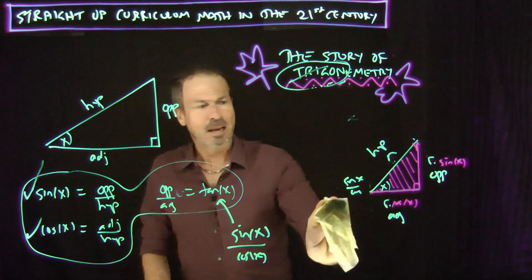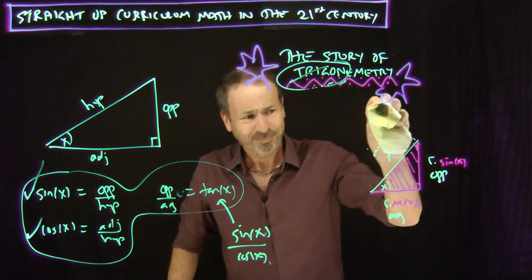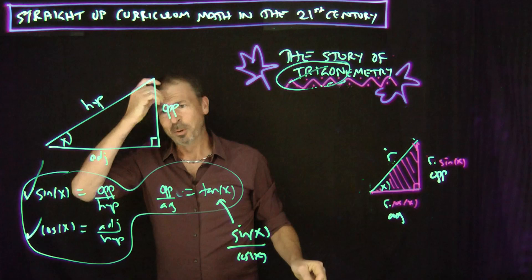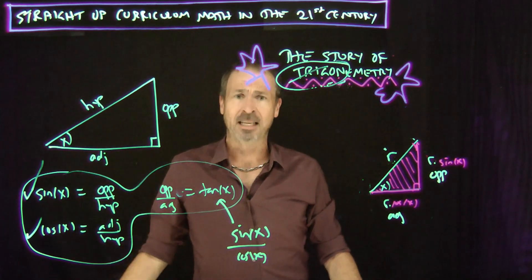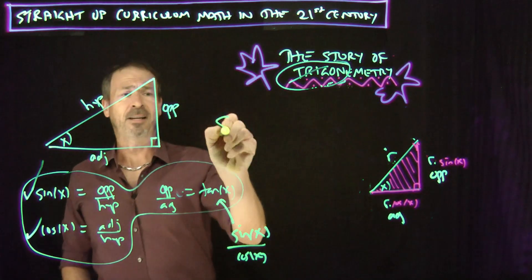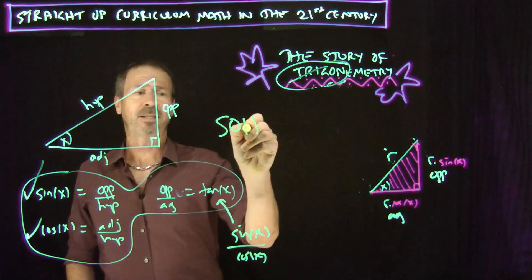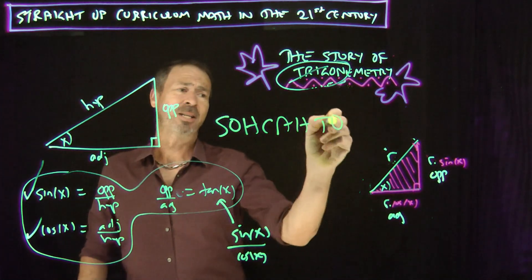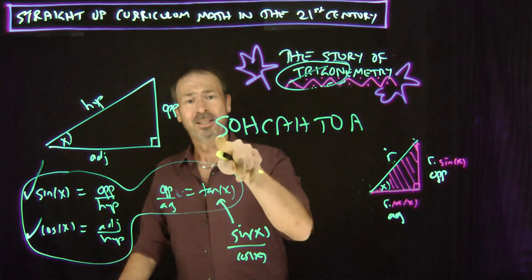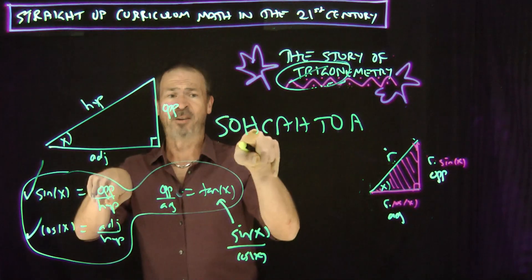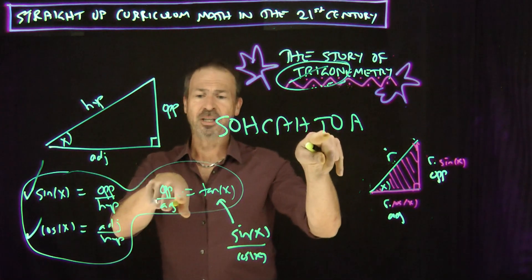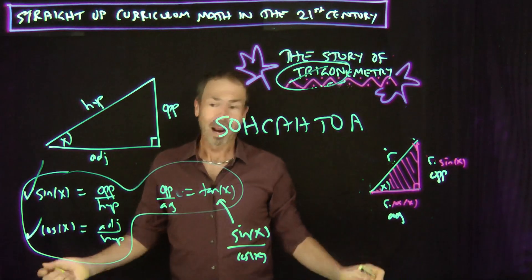But it all seems mysterious. He said, okay, memorize those ratios and off we go. Some students have trouble memorizing those ratios, so we have little mnemonics like SOH-CAH-TOA to help. Have you seen that before? Sine is opposite over hypotenuse, cosine is adjacent over hypotenuse, tangent is opposite over adjacent.